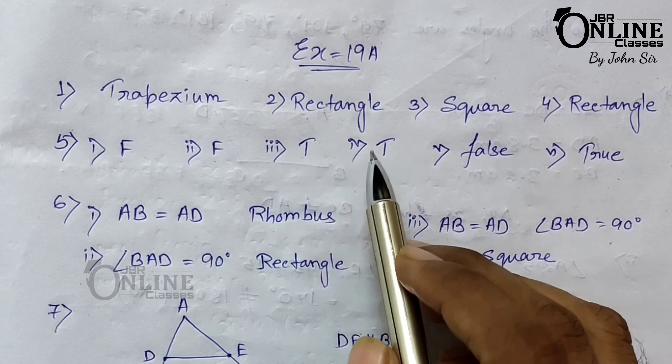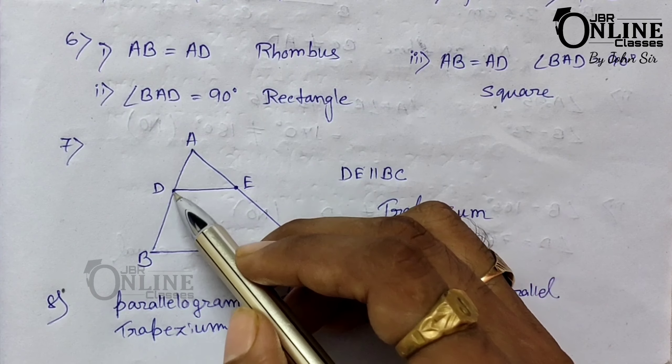Number two: if angle BAD equals 90 degrees, then in a parallelogram with opposite sides equal and one angle equal to 90 degrees, it is a rectangle. Number three: if AB equals AD and angle BAD equals 90 degrees, then two adjacent sides are equal and one angle is 90 degrees, so it is a square.